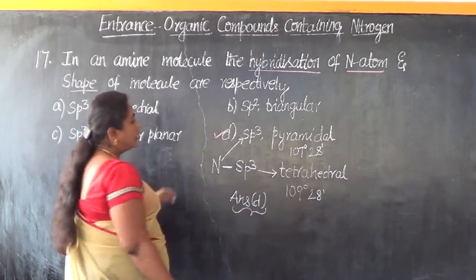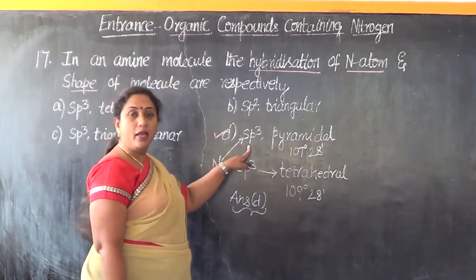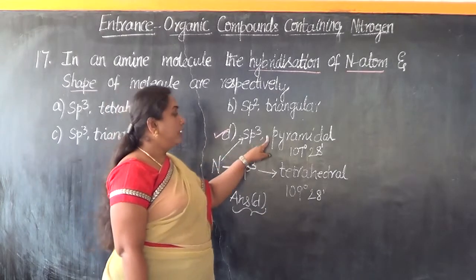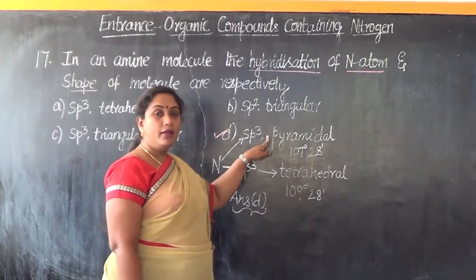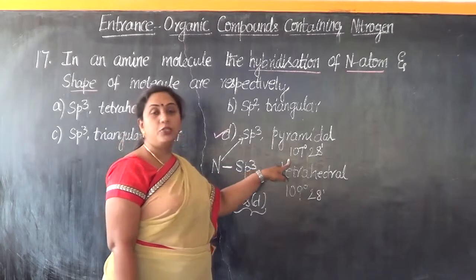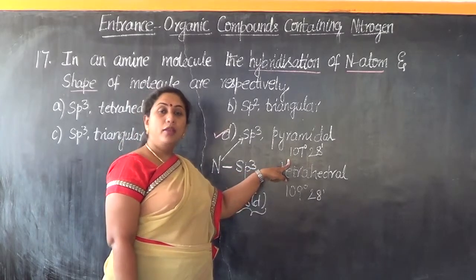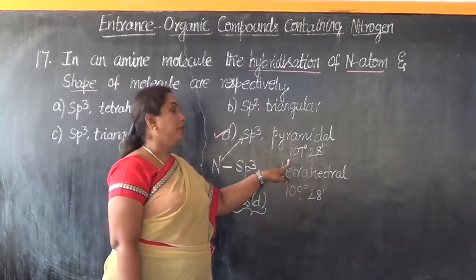That is, the nitrogen atom has undergone SP3 hybridization. It is maintaining a pyramidal shape and an additional point to be registered is it will maintain a bond angle of 107 degree 28 minutes.